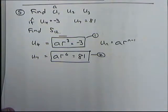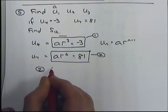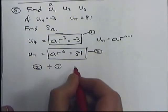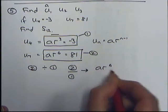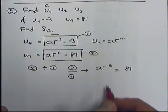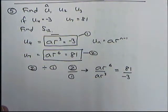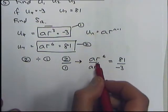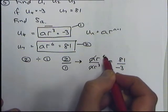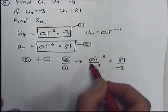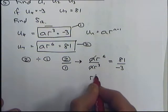I need to find both A and R. I'm going to divide equation 2 by equation 1 as a fraction. Equation 2 is AR to the power of 6 equals 81, divided by equation 1, AR cubed equals minus 3. The A on top and A on bottom cancel out. R to the power of 6 divided by R to the power of 3 is R to the power of 3, since 6 minus 3 equals 3.